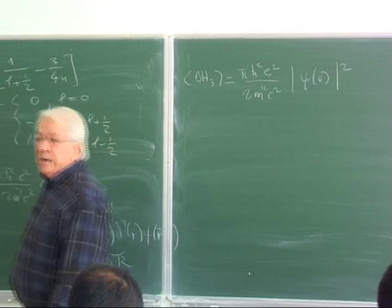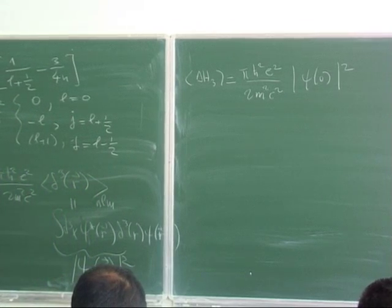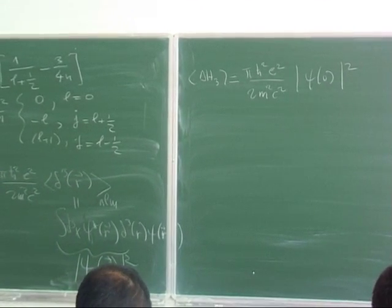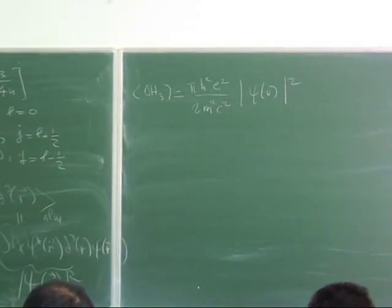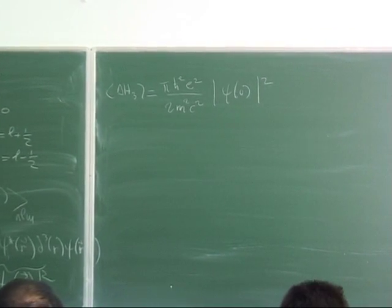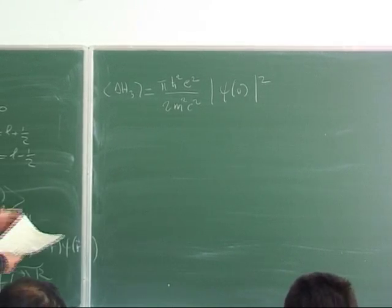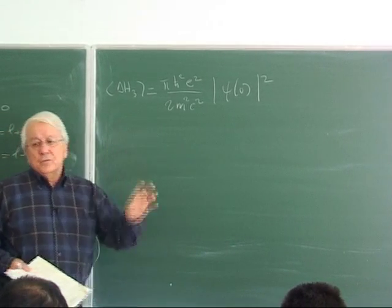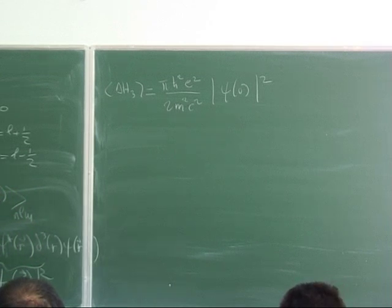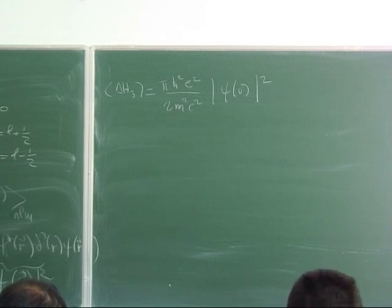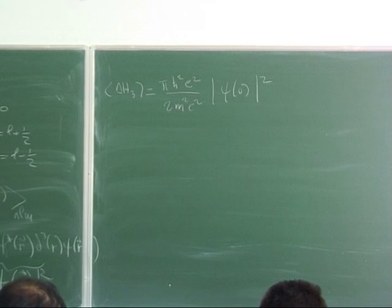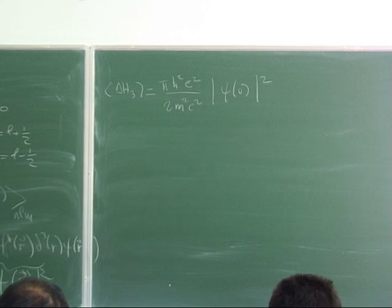It is interesting that the value of the wave function at the origin plays an important role here. This formula is used heavily in high-energy physics in the construction of quarkonia — when constructing mesons from quarks and antiquarks and computing mass spectra in high-energy physics, one needs these perturbation techniques and again encounters the wave function at the origin.